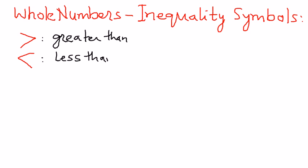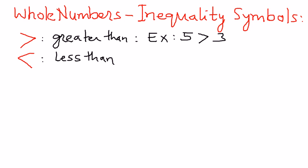So just to understand this with a greater than example — let's take a simple example. Let's say we have two numbers, 5 and 3. 5 is greater than 3, so we put a greater than symbol between 5 and 3.